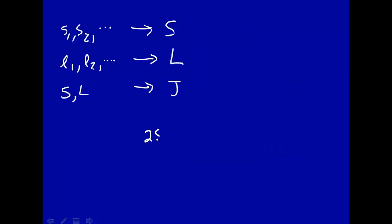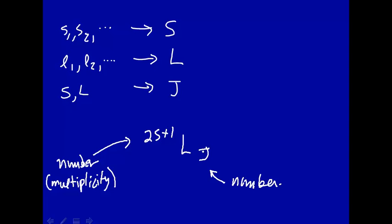The symbol is 2S+1, L subscript J. So this is a number, it's called the multiplicity. This is a number and that's the particular value of J. And this is a letter which is coded similar to the atomic symbols. If this is the value of L, this is the symbol.